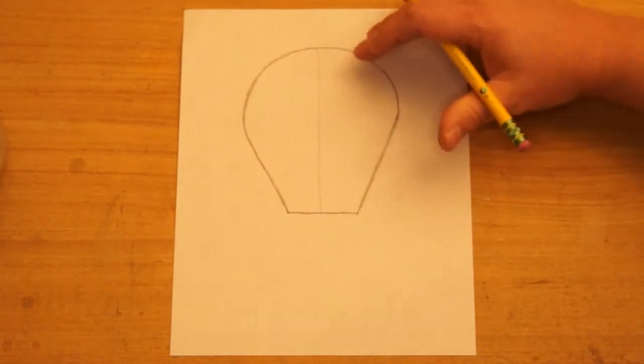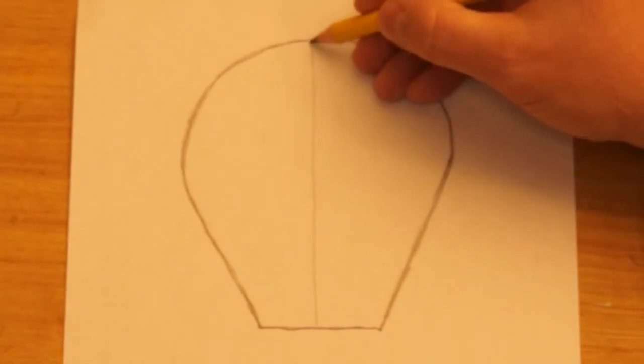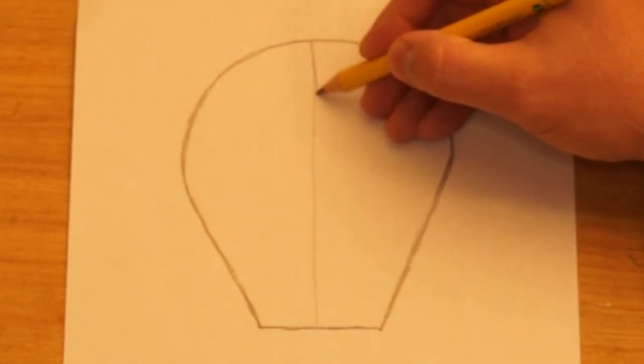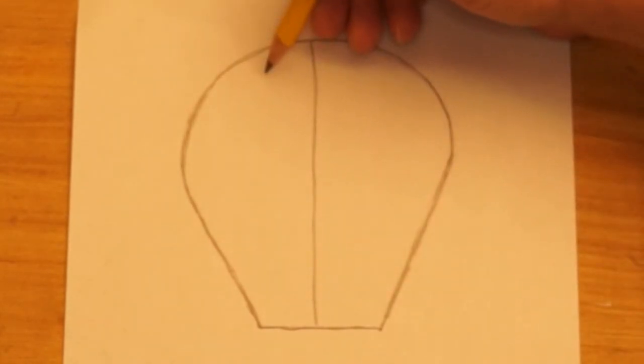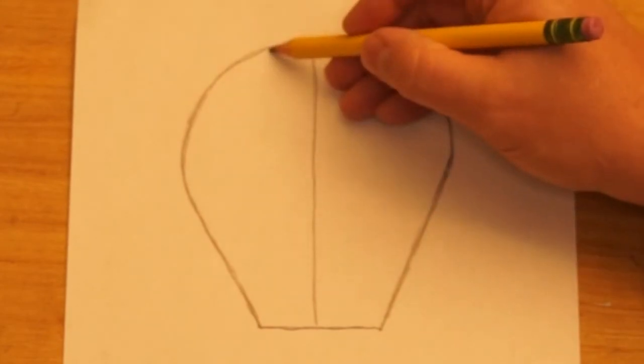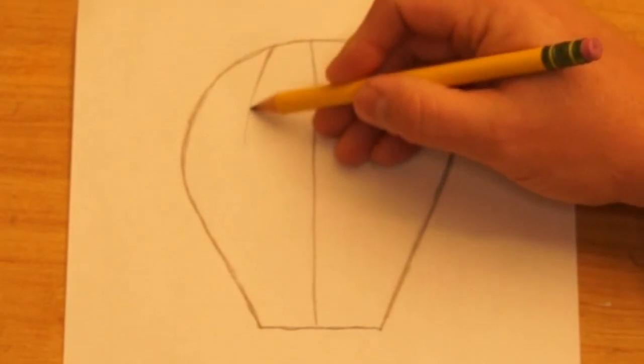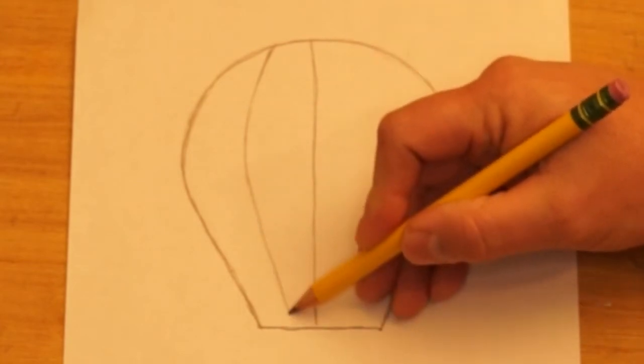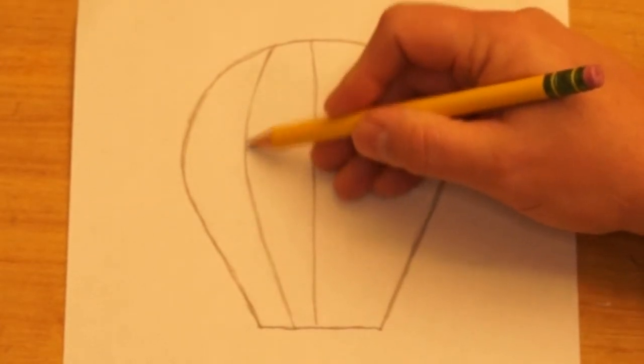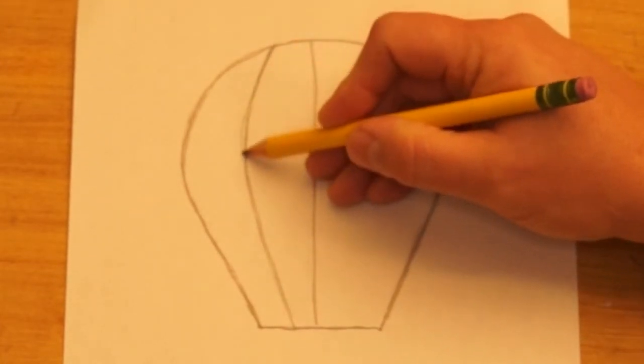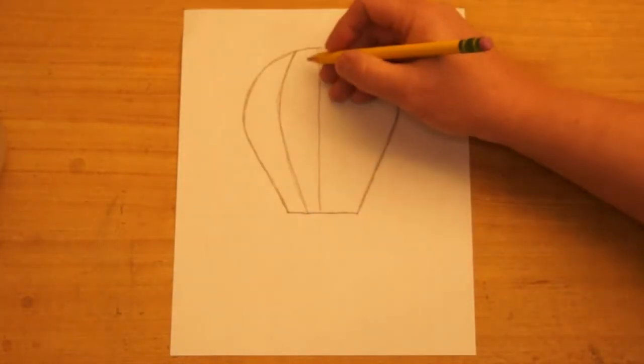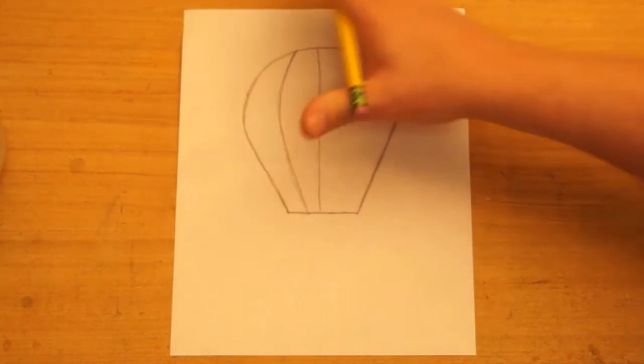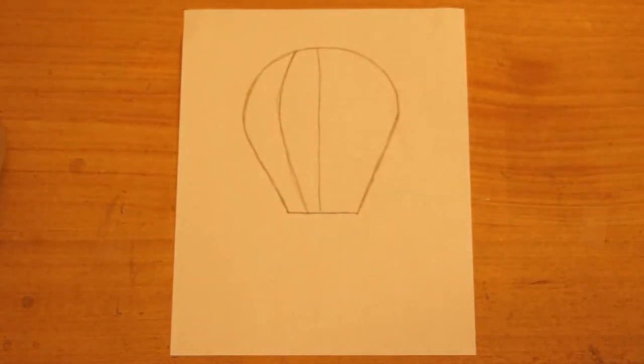On the balloon we're going to make some stripes. So we leave this line here that we have in the middle. And then I'm going to make a second line on the left side here that's halfway in between. And I'm going to curve that line as I go around like this. And we curve that because that makes the balloon look more round. More 3D.